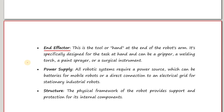The end effector is a tool or hand at the end of the robot's arm. It is specifically designed for the task at hand and can be a gripper, a welder torch, a paint sprayer or a surgical instrument.